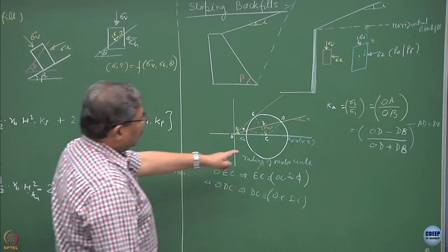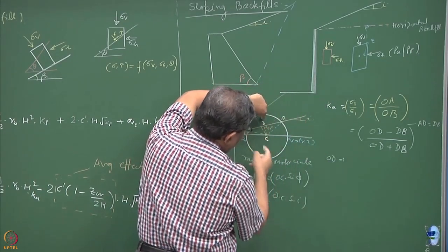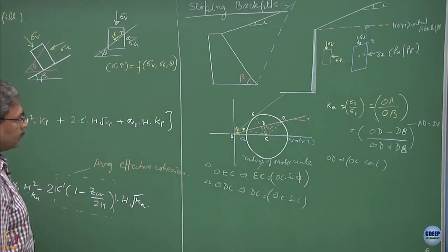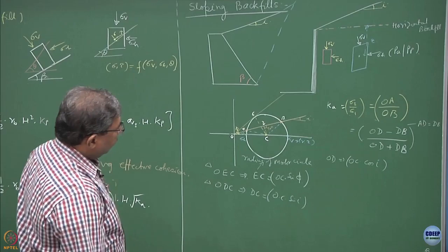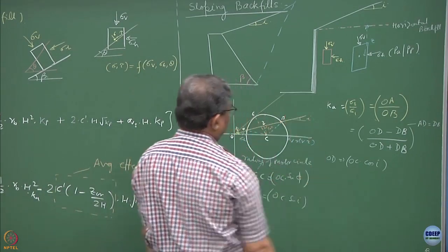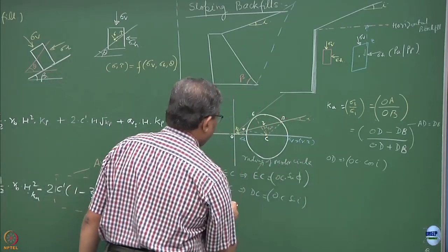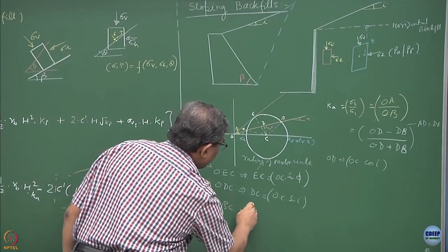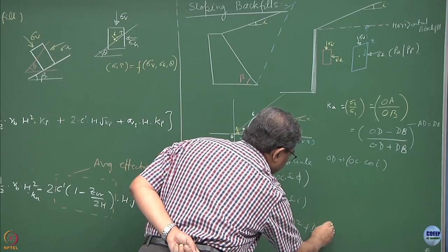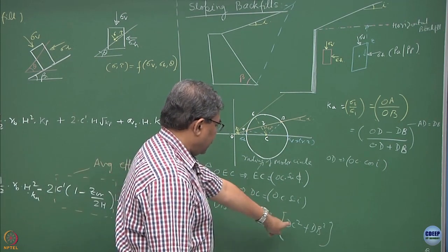So now can you substitute for OD? OD can also be written as OC cos of i because this angle is i. OD equal to OC cos of i. And DB equal to, which is equal to AD, so how will you find out DB? We can use another property of triangle DBC which is BC square equal to DC square plus DB square. So DB is nothing but under root of DC square minus DC square and that will be equal to DB.